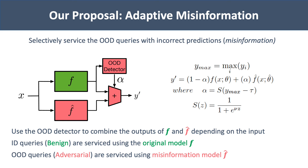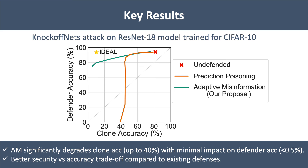We evaluate the defense by plotting the trade-off between clone accuracy on the x-axis and defender accuracy on the y-axis. An ideal defense minimizes clone accuracy without degrading defender accuracy. Our defense offers a significantly better trade-off between security and accuracy compared to prior works.